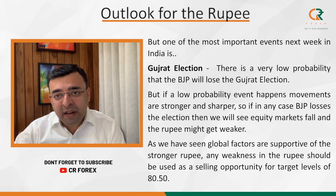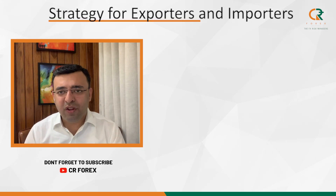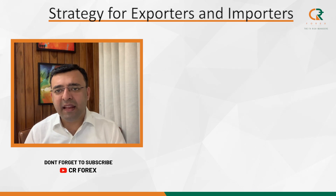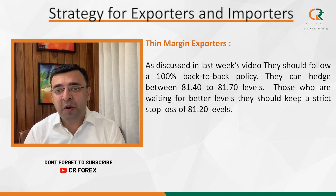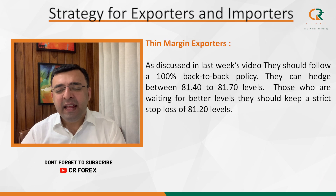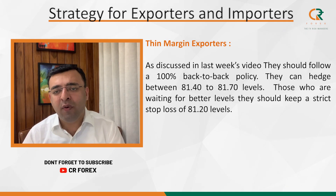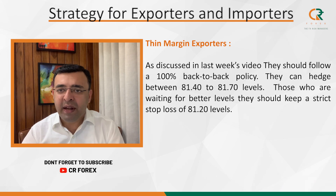Now let us discuss strategy for thin margin exporters like agri exporters or chemical exporters. Last week we suggested they should follow a 100 percent back-to-back hedging policy, and on the current week we are suggesting the same. For hedging, they can participate between the 81.40 to 81.70 level. Those exporters who want to wait for a better level can keep a stop loss of 81.20 — if 81.20 is broken, they should immediately go and hedge.